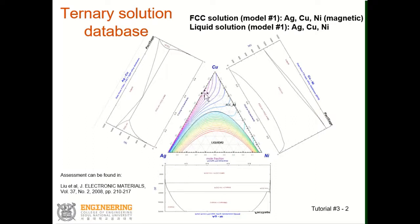So in this ternary silver-copper-nickel system, there is only one FCC solution, containing silver, copper, and nickel as species, and this has the miscibility gap. Also this ternary system contains a liquid solution. So there are only two solutions in this ternary system.